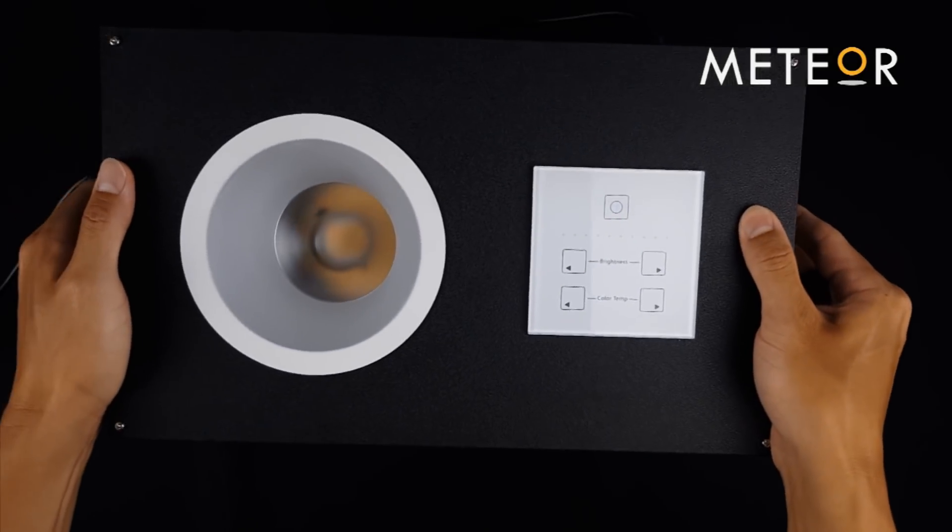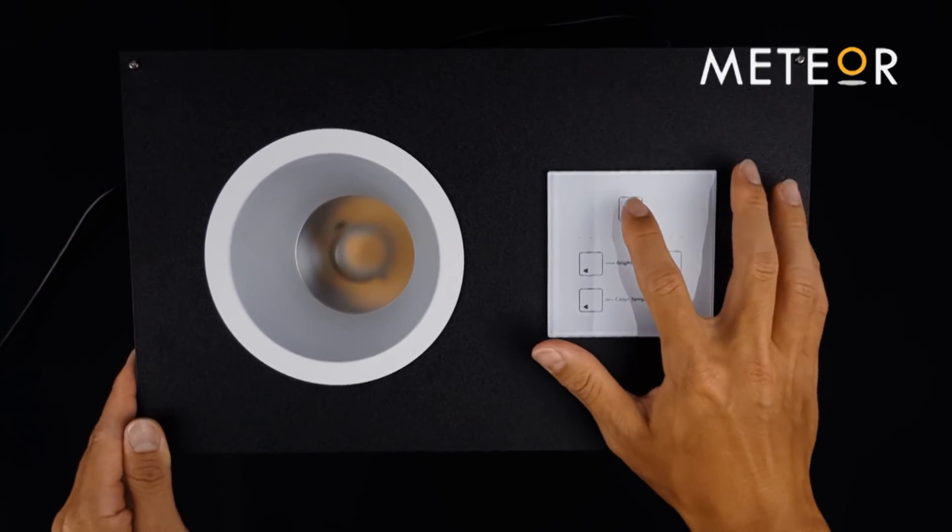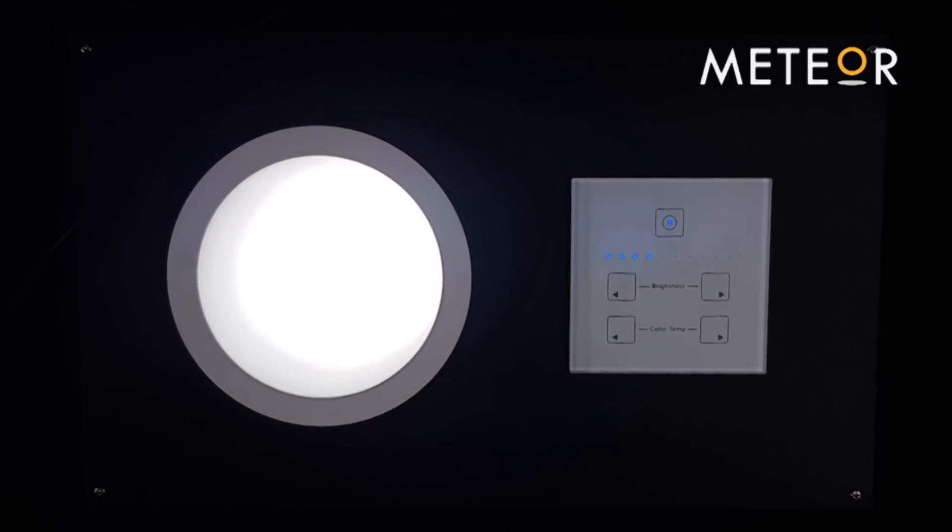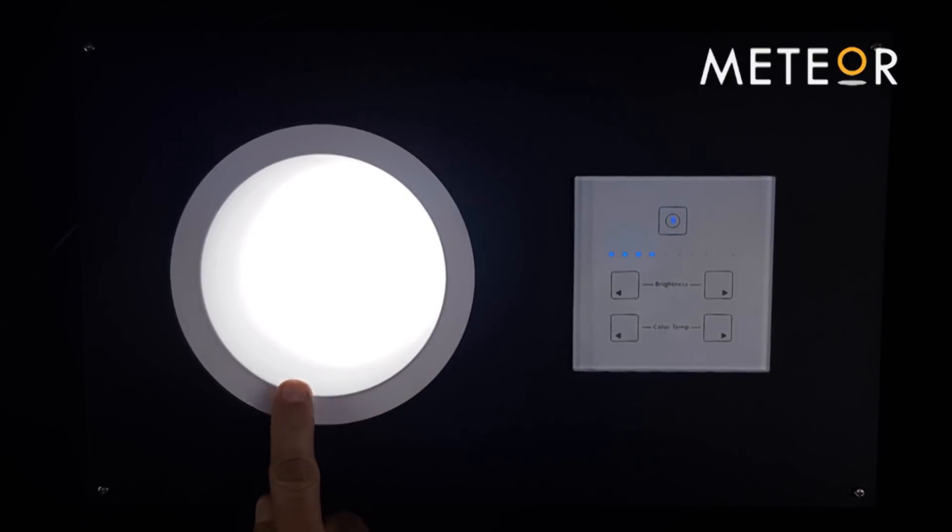Here we have a demo unit of the 4-inch Rev Series recessed downlight with the ColorFlip chip that emits a uniform color blended light with no visible LEDs.